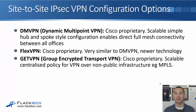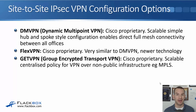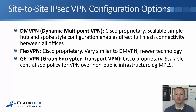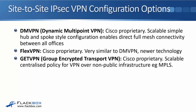FlexVPN is basically a newer version of DMVPN — very similar, but a newer technology. The last option is GetVPN, which stands for Group Encrypted Transport VPN. Again, this is Cisco proprietary. It offers scalable, centralized policy for VPN over a non-public infrastructure — not going over the internet — and is often used over MPLS. Those are all the different configuration options, but the detailed configuration is not required knowledge for the CCNA exam.